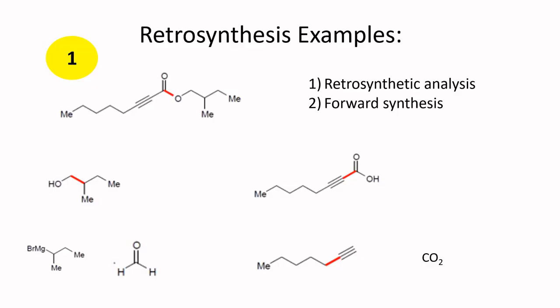In this video we will be discussing some retrosynthesis example questions and how we can solve problems related to retrosynthesis. The first example is an ester compound because it has a C-O-O functional group. To solve this type of problem we need two items: the retrosynthetic analysis and the forward synthesis step.